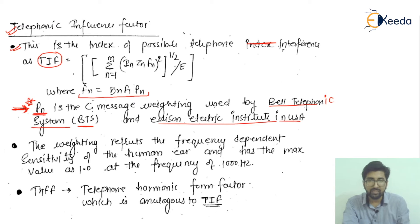The weighting reflects the frequency-dependent sensitivity of the human ear. It depends on the decibel value and has a maximum value of 1.0 at the frequency of 1000 Hertz.